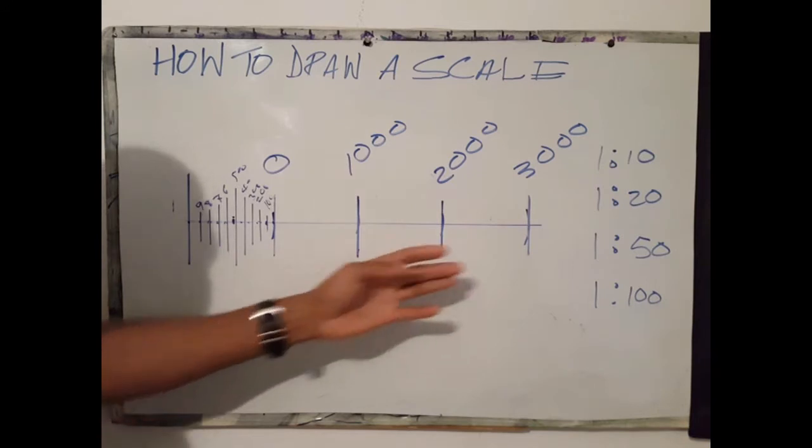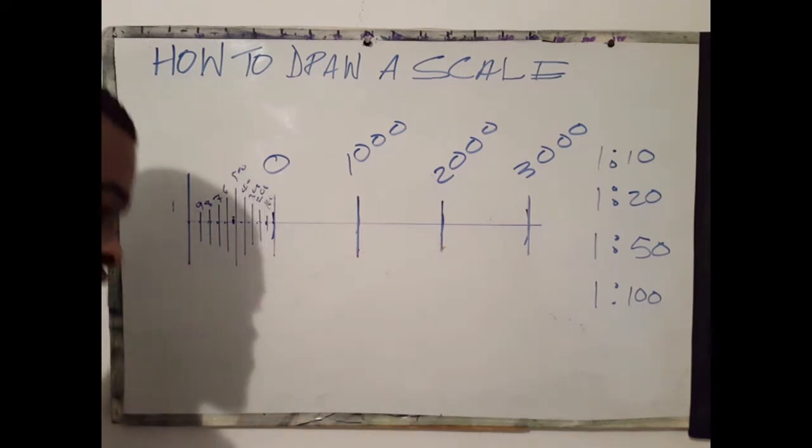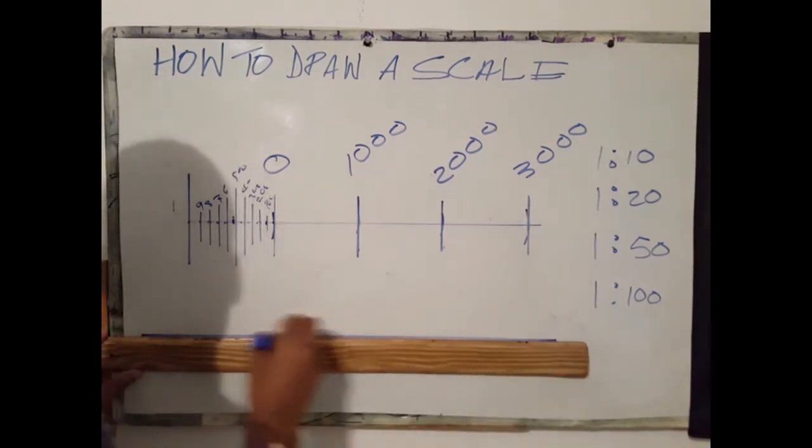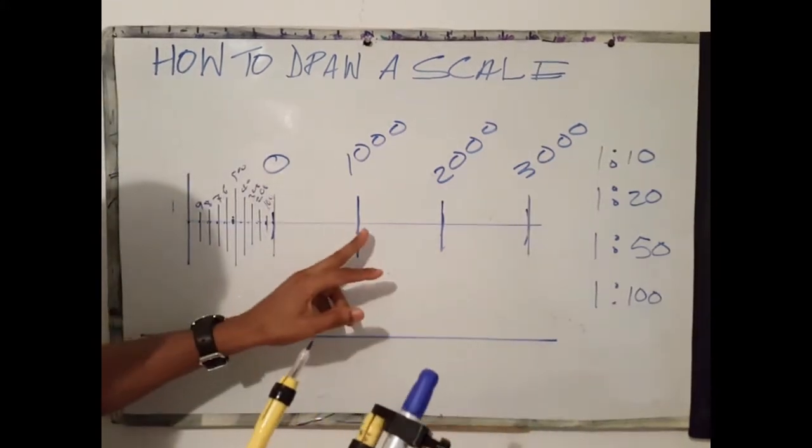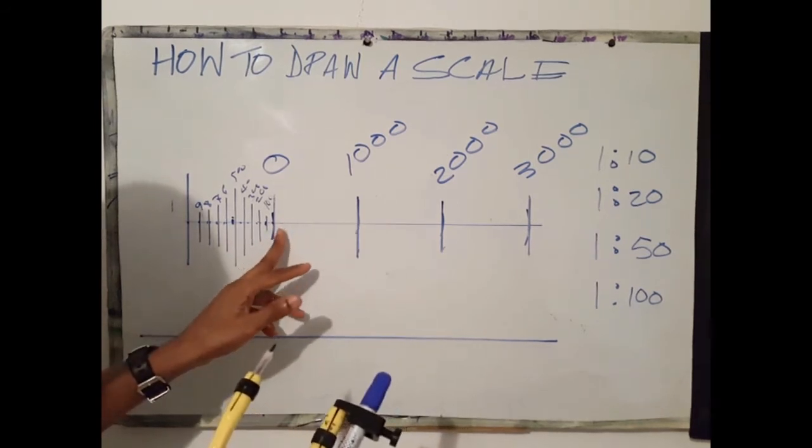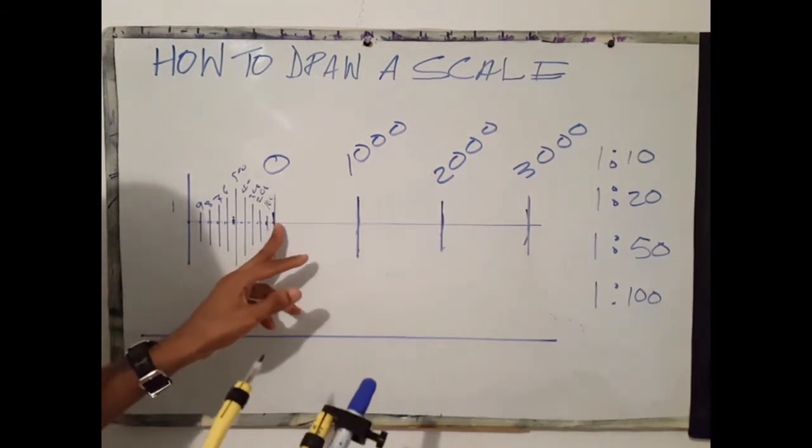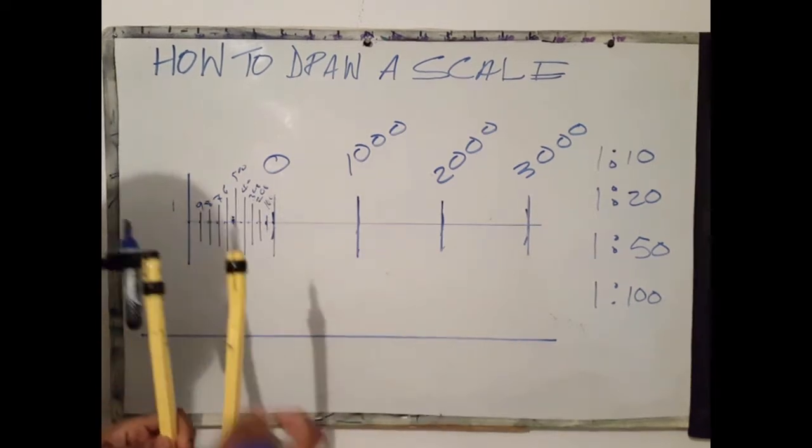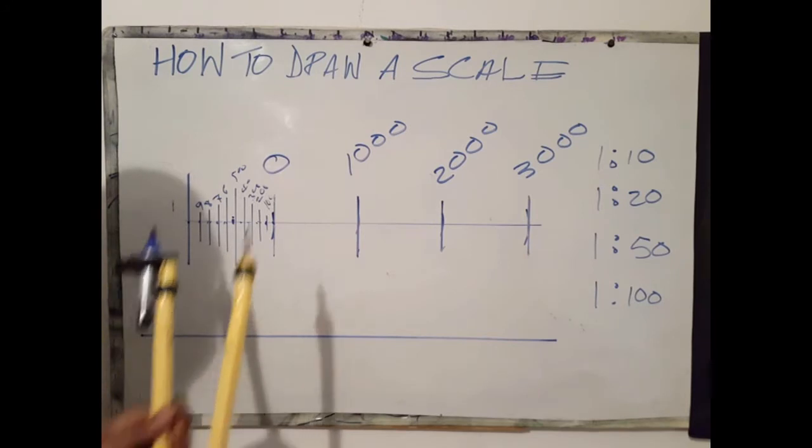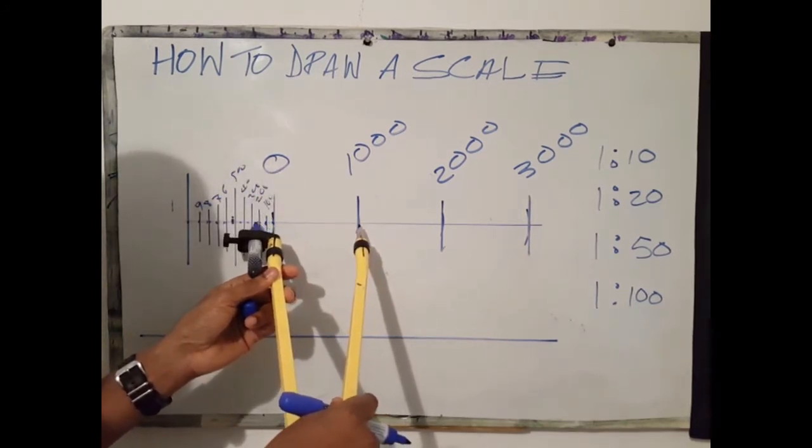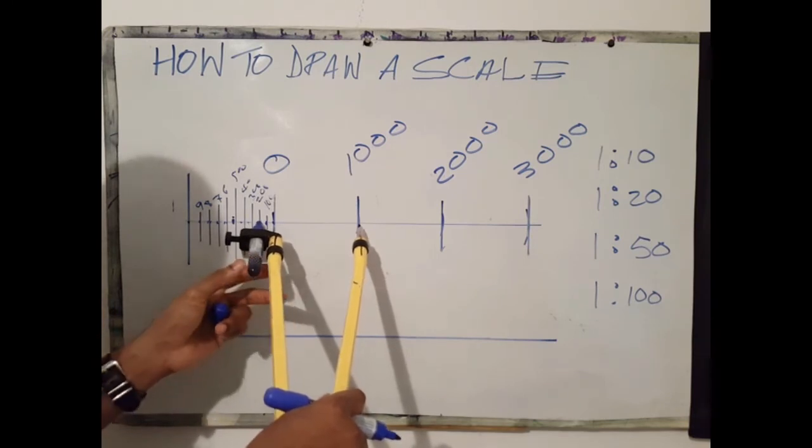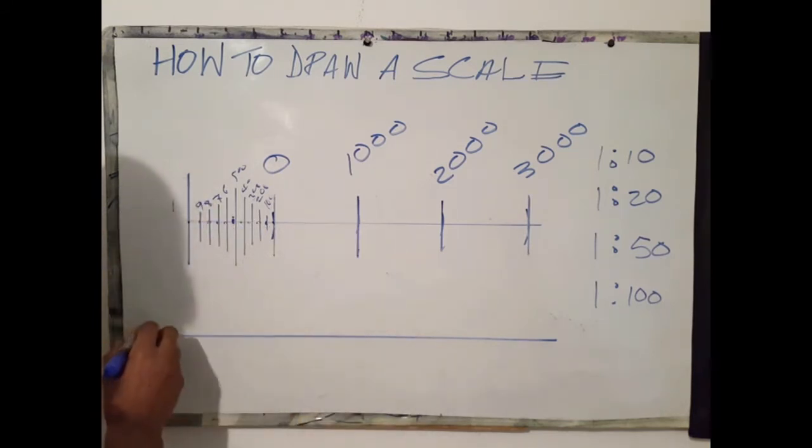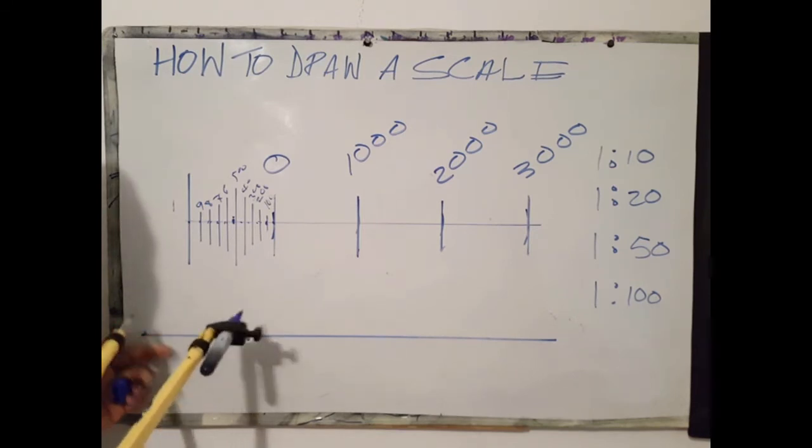How do we use this scale to actually draw? From 1000 to 0 would be 1000, from 2000 to 0 would be 2000, from 3000 to 0 would be 3000. If we wish to draw, say for example 1200 mm, you would put your compass at 1000 and you would go over to 2, to the second increment. That would be 1200. To transfer that to your drawing, you would go from here to there.